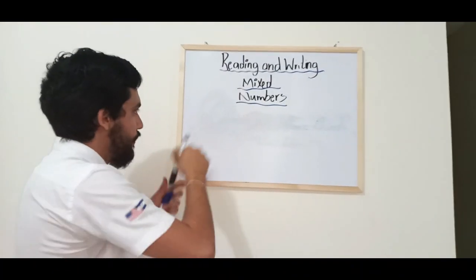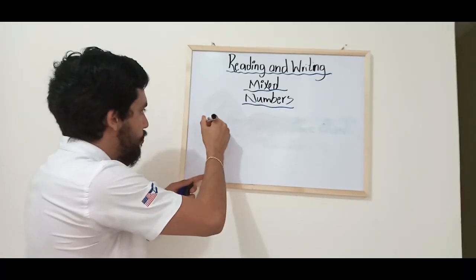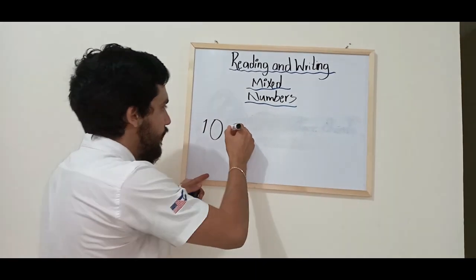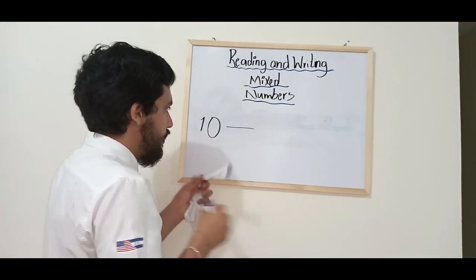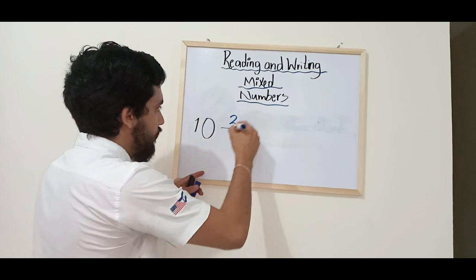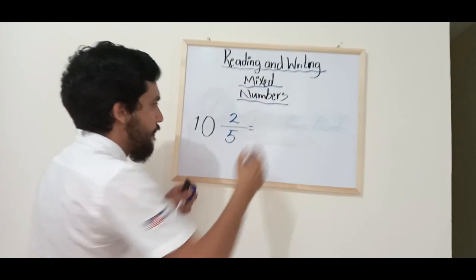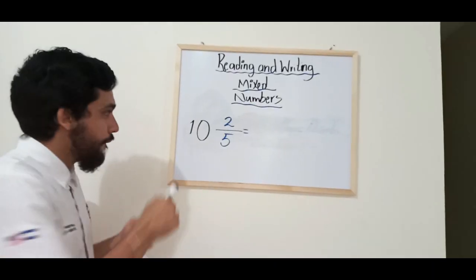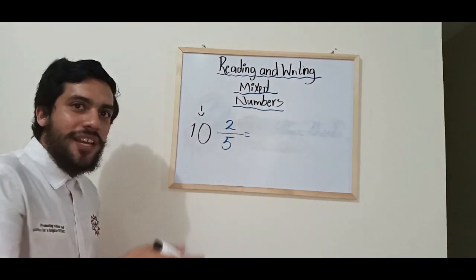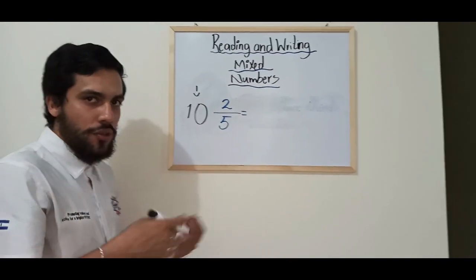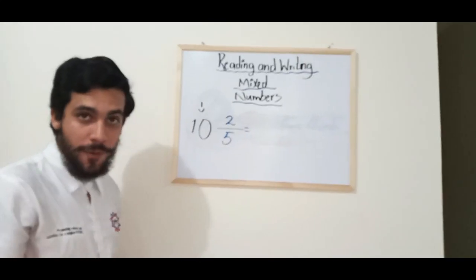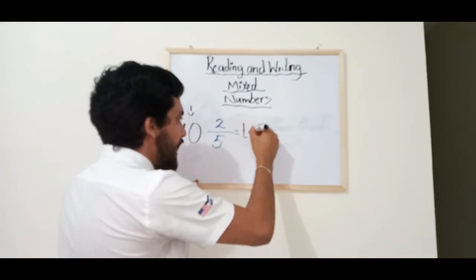I'll have another example for you. Let's say 10 and 2/5. So remember, this number over here will be read as a whole number, just like you normally do it. So what is the name of this number? 10.